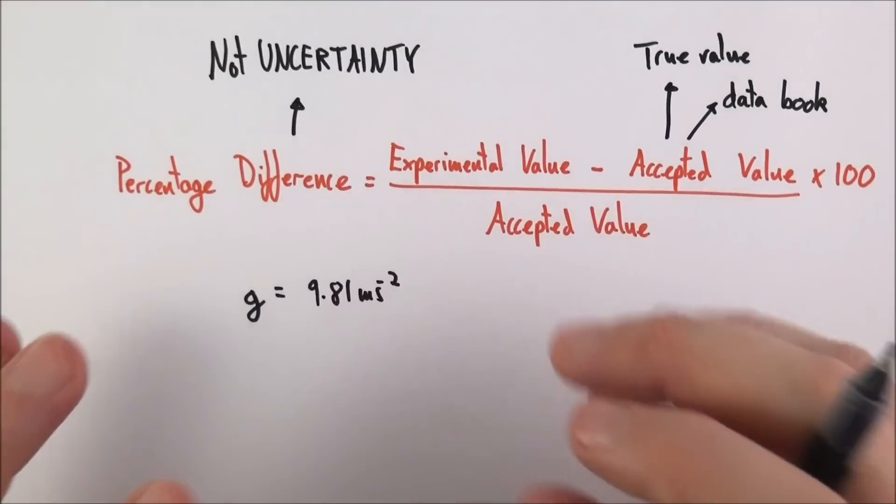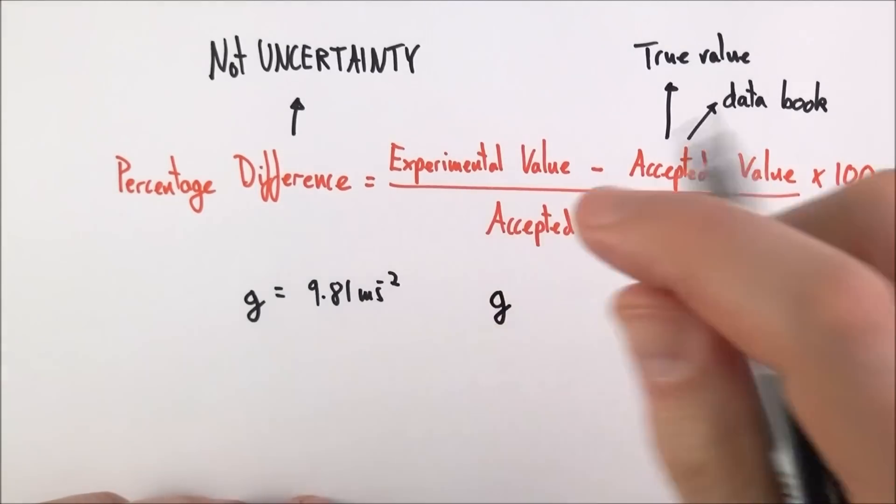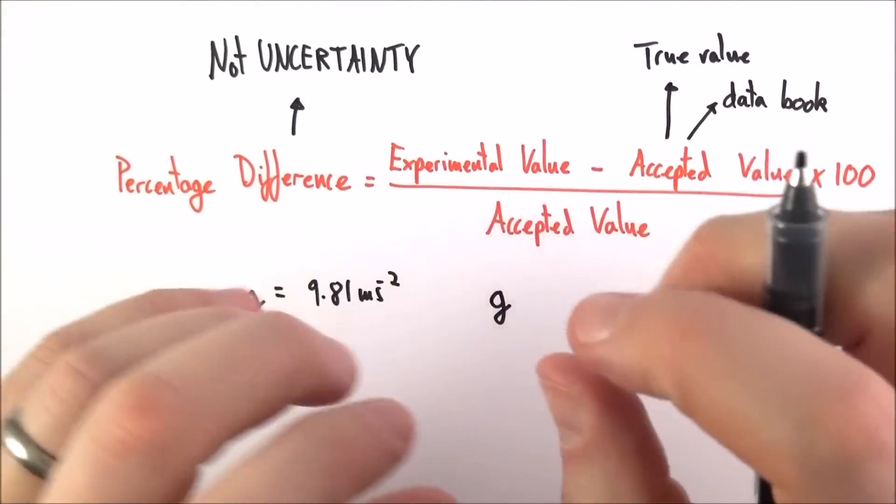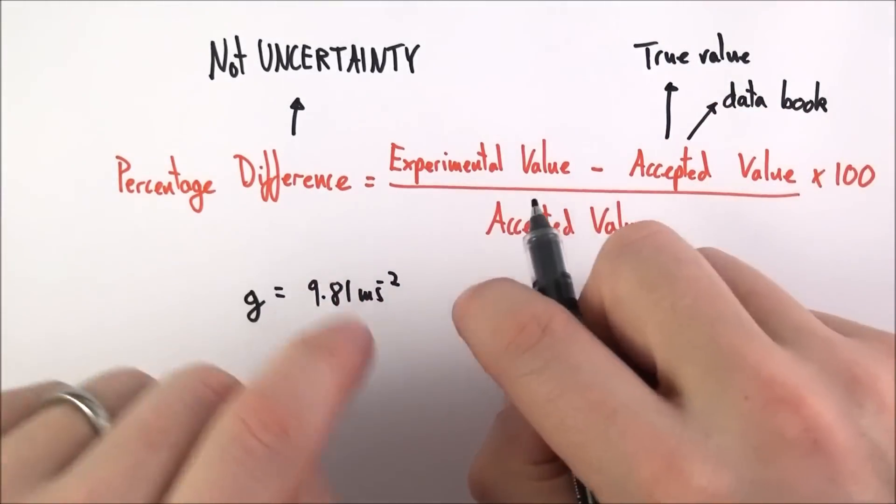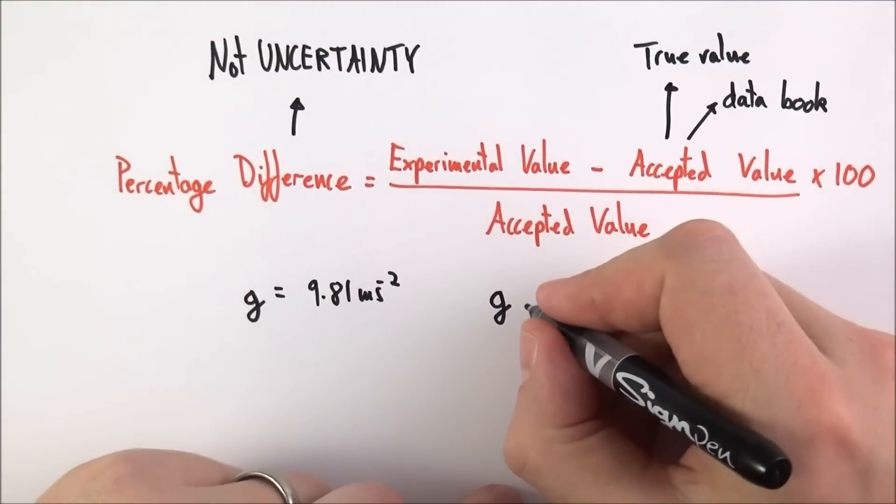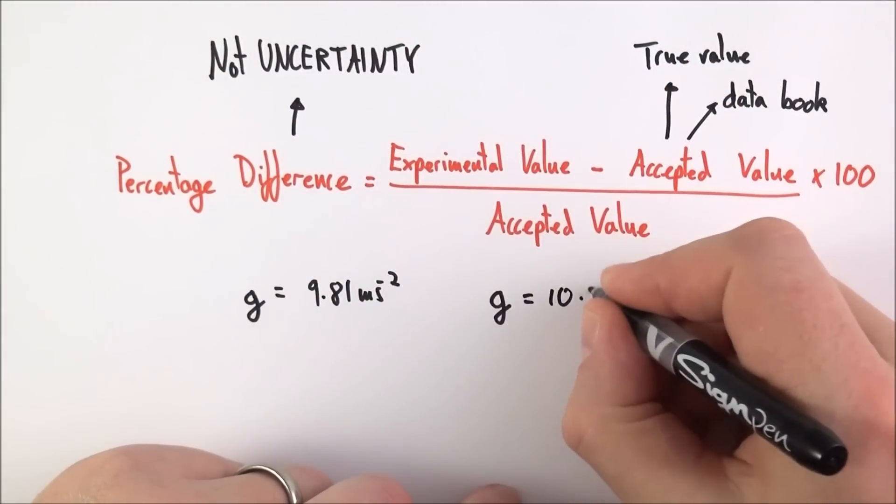However, you might do an experiment and find that, maybe you're letting a ball drop through a couple of plates, or you're using a pendulum to find g. There's loads of different ways of doing it, but you might find that your value of g is equal to 10.35.